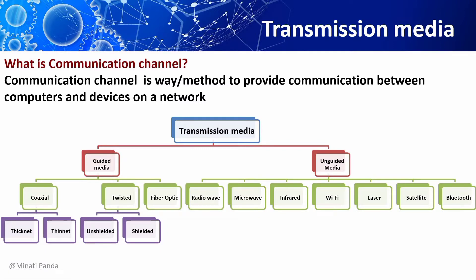A communication channel is a way or method to provide communication between computers and devices on a network. Transmission media is a communication channel that carries the information from the sender to the receiver. The data is transmitted through electromagnetic signals. The main functionality of transmission media is to carry the information.